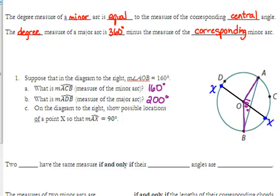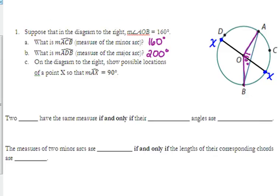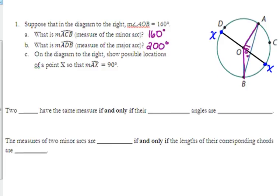All right, so now this is one of these kind of like, well duh, that makes sense kind of statements, but we need to write it down anyway. Two arcs have the same measure if and only if their central angles are congruent. That's kind of obvious. We know that central angles have the same measure as the arcs, then the arcs are only going to have the same measure if the angles do.